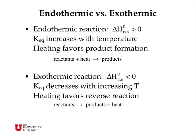To recap: if we have an endothermic reaction, delta H for the reaction is greater than zero, then the equilibrium constant increases with temperature and heating favors product formation. An easy way to think of this is to think of heat as a pseudo-reactant. So for an endothermic reaction, reactants plus heat go to products, and so you're adding a reactant and forcing the reaction to go farther to the right as written.